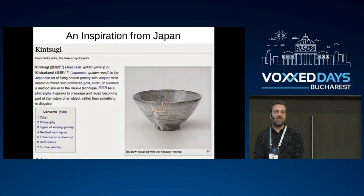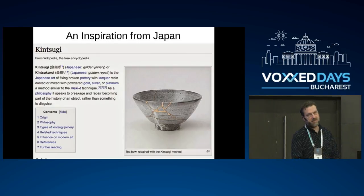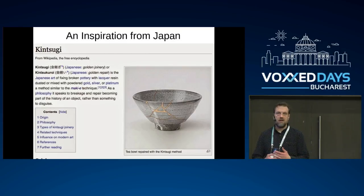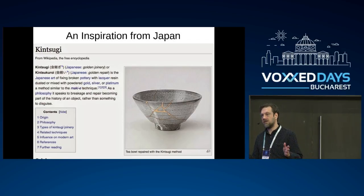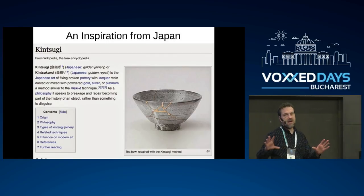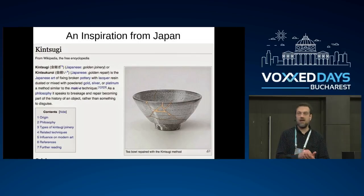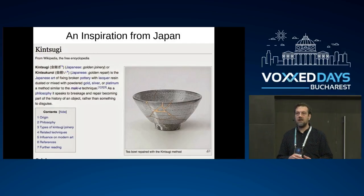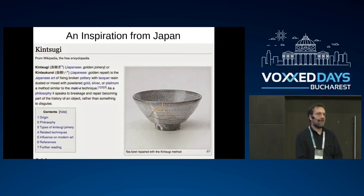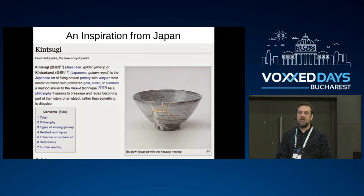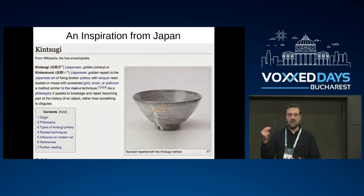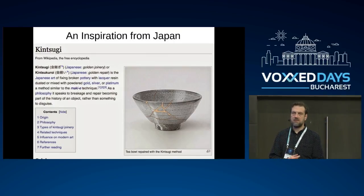I found this very interesting Japanese tradition: if you break a cup, something valuable, instead of throwing it away or doing some kind of invisible fix — which for sure will not be invisible — you emphasize the fact that the object was broken, and then you repair it. This is a story with the emperor of Japan and his favorite cup. This is called Kintsugi, and it's a Japanese older tradition.